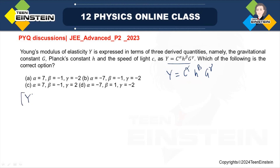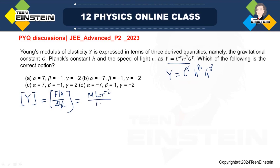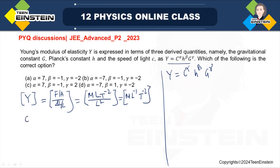Let us write down the dimension of Young's modulus Y. This is stress by strain. Strain is delta L by L, which is a dimensionless quantity. So the dimension of Y is MLT to the power minus 2, divided by L squared — that is force divided by area. Ultimately, you get M L to the power minus 1 T to the power minus 2. And for the speed of light, the dimension is L T to the power minus 1.